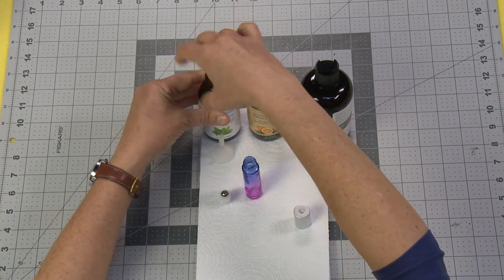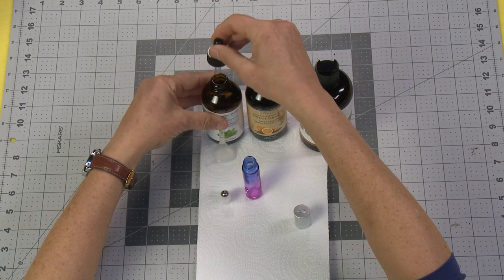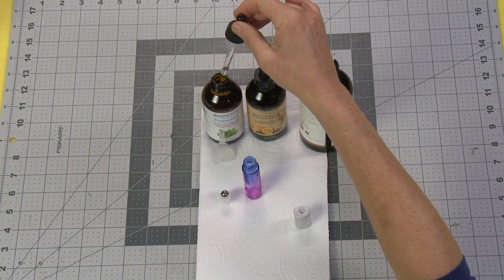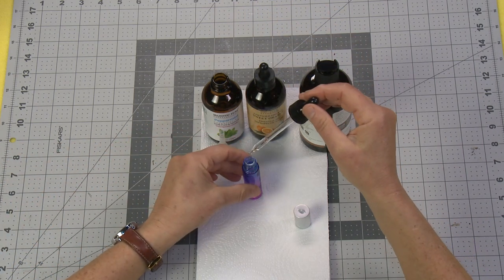So the first thing we're going to do for this recipe is we're going to add five drops of peppermint and five drops of sweet orange. This is going to make our Focus Blend which we can all use a little focus.